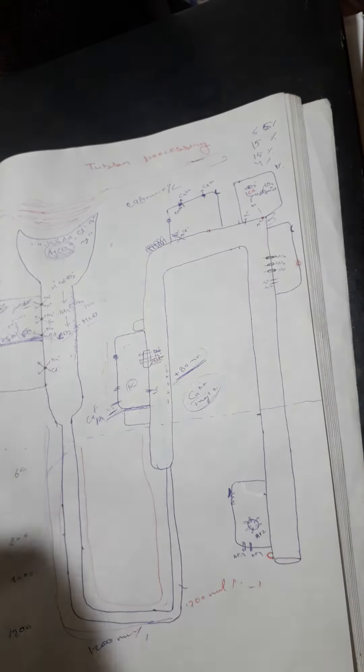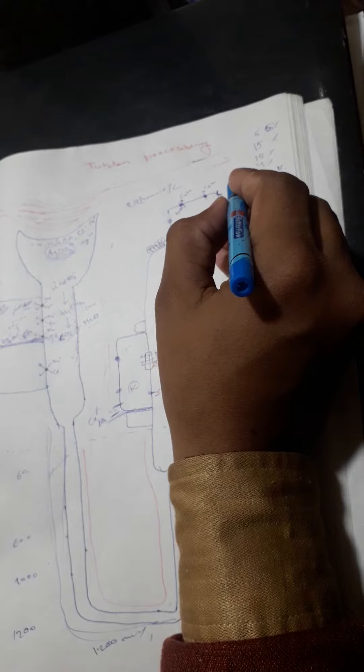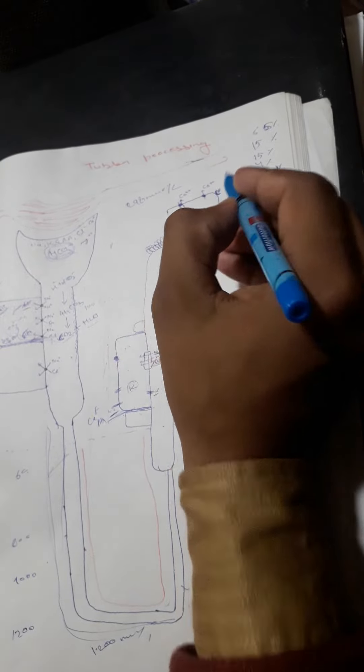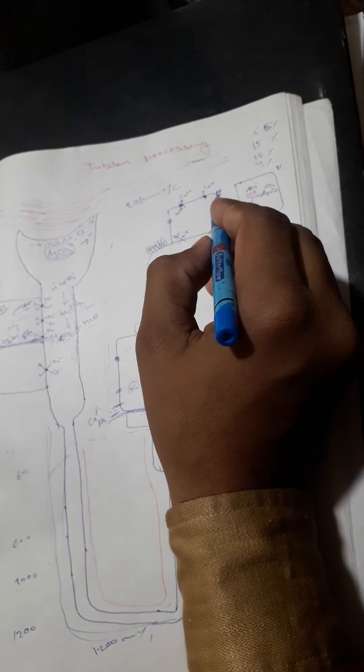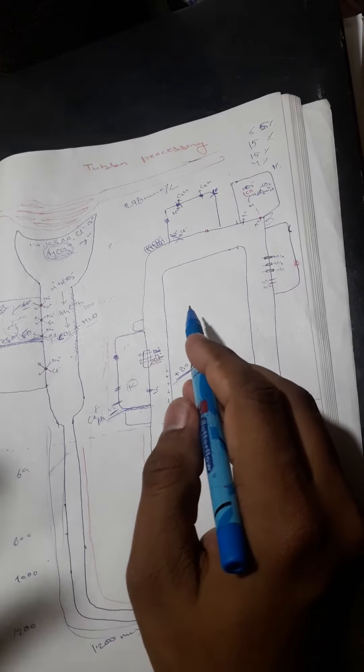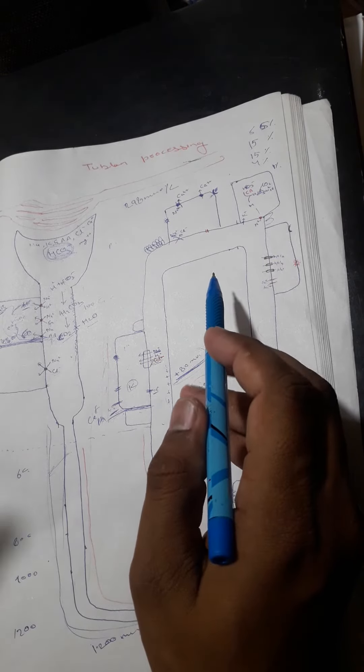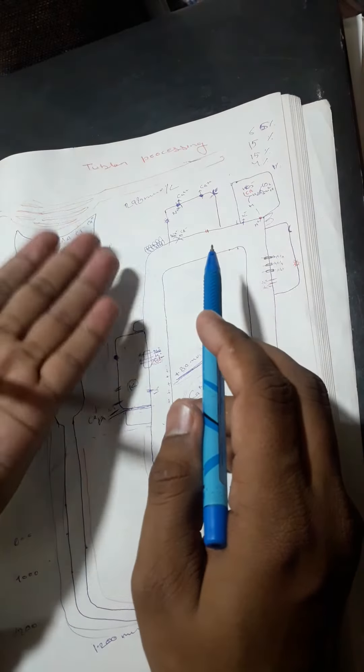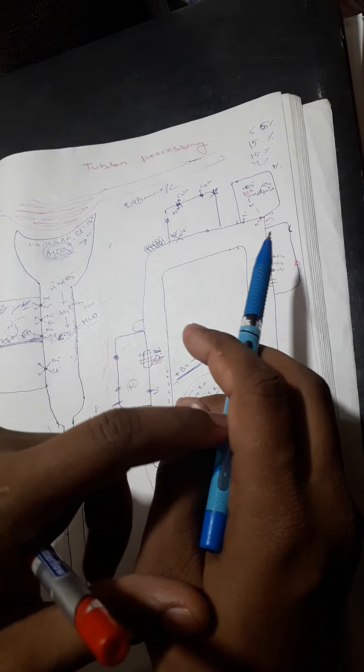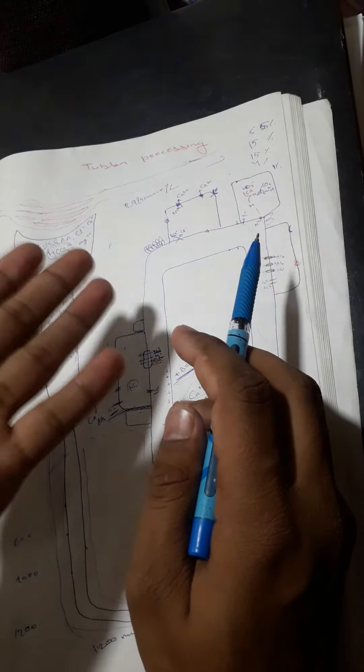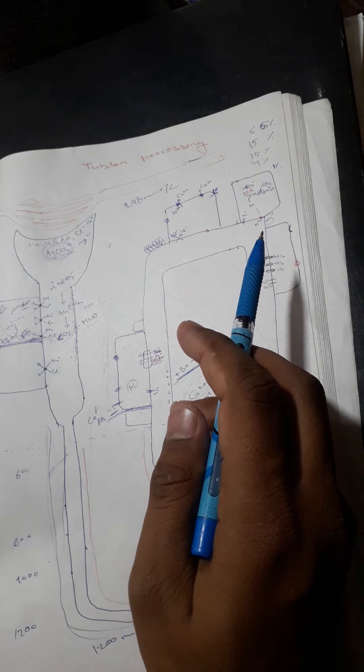Parathyroid hormone comes from the parathyroid glands and binds here. When it binds, then G stimulatory protein activates, followed by adenylyl cyclase activation, which converts ATP into ADP.